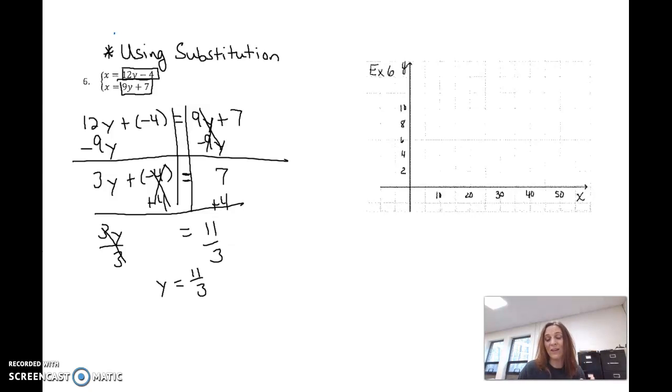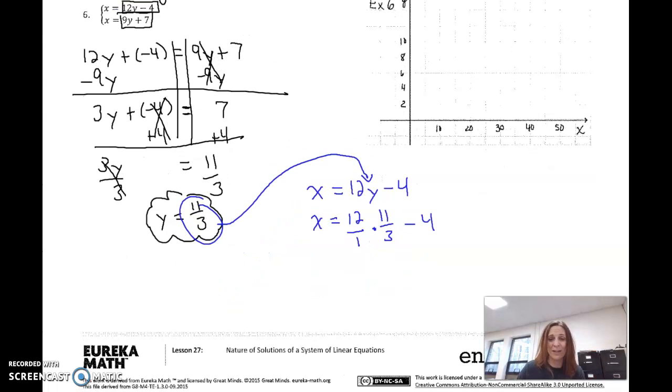All right, with substitution, so we have graphing, we're going to have something called linear combination, and then we have the substitution here. What we do is we take this y and we plug it in. And you can plug it into either one of these. I will just use this first one here, which is x equals 12y minus 4. I'm going to take this 11 thirds here, and I want to drop it in for y. So x is going to equal 12, and I'm going to write it as 12 over 1 times 11 over 3 minus 4. Don't get intimidated by this stuff. So I can cross-reduce. 12 and 3 have a common factor of 3. 3 goes into itself one time. It goes into 12 four times.